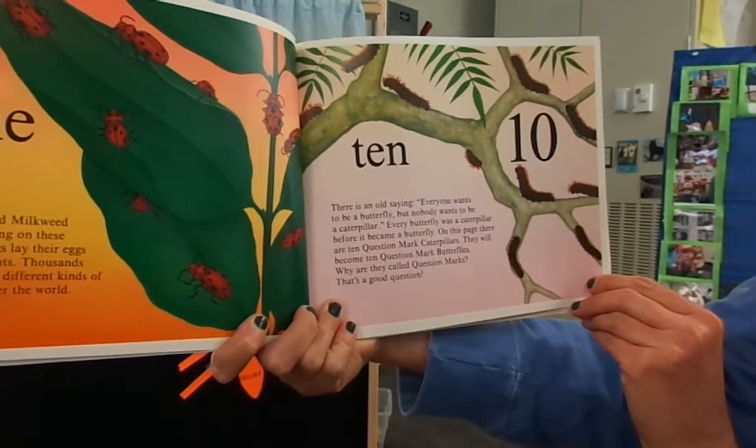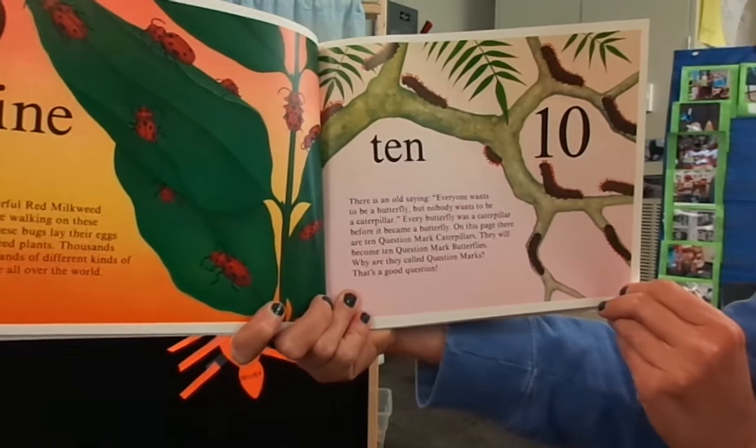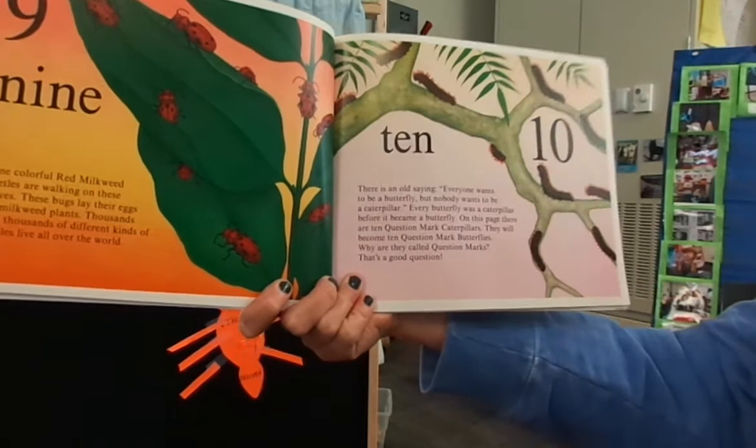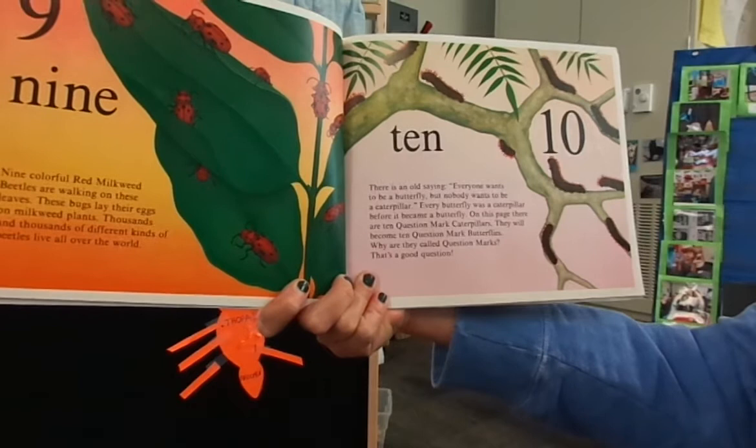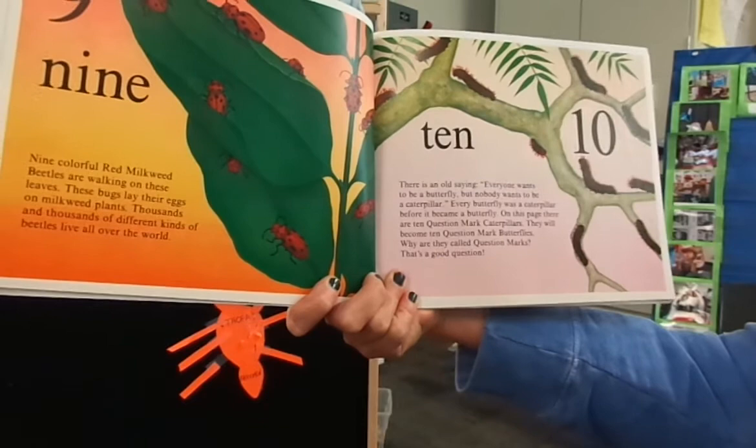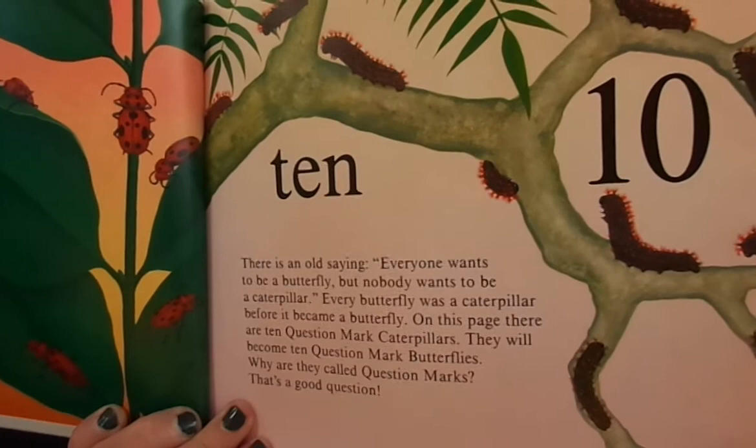Ten! There's an old saying: everyone wants to be a butterfly, but nobody wants to be a caterpillar. Every butterfly was a caterpillar before it became a butterfly. On this page there are ten question mark caterpillars — they will become ten question mark butterflies. Why are they called question mark butterflies? That's a good question — what do you think?